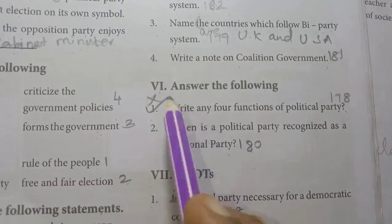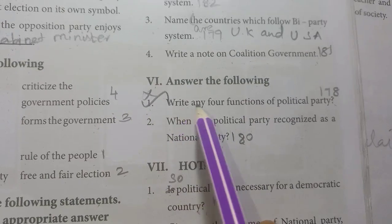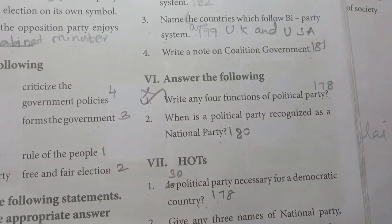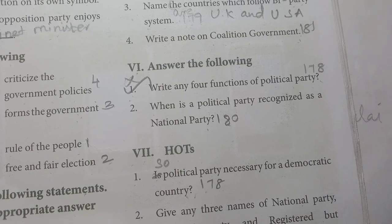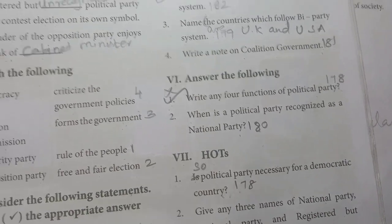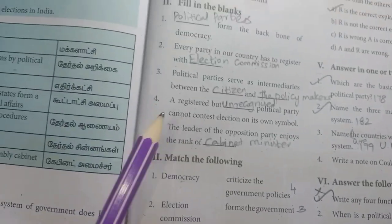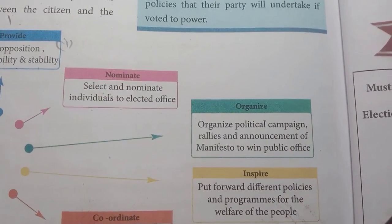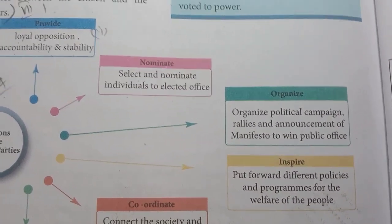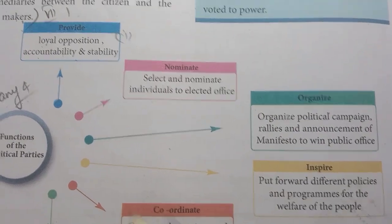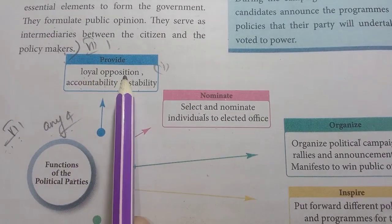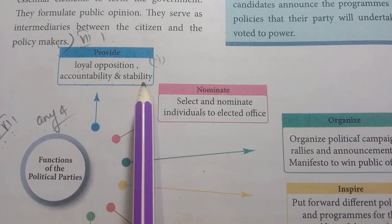Answer the following. First one: write any four functions of political party. Page number 178. The first function is loyal opposition, accountability and stability. There are six functions in total.